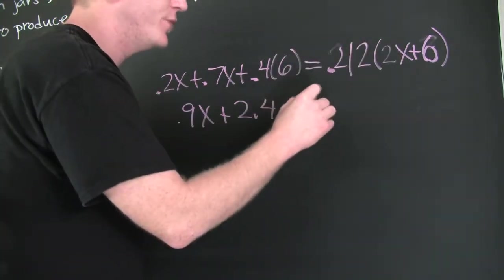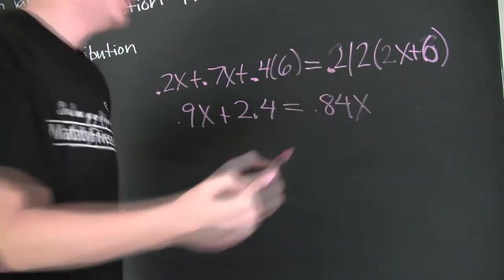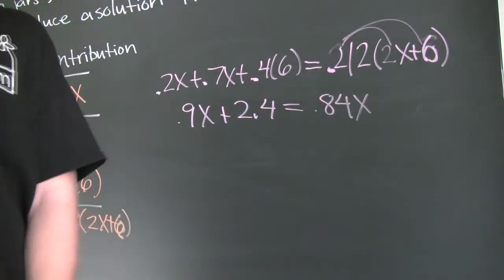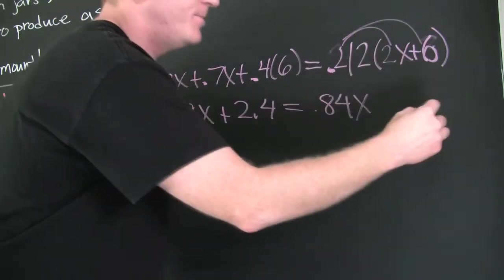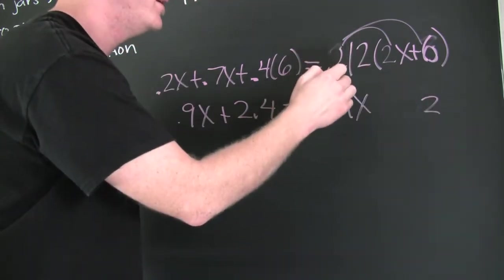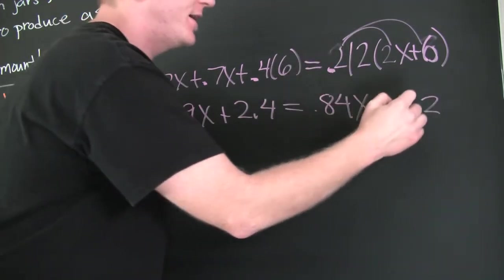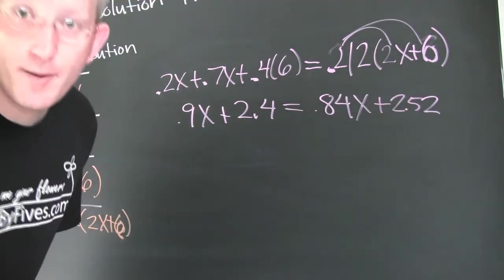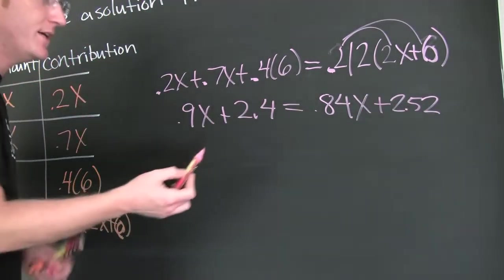Now here I'm looking at 0.42 because my final solution is to be 42% acid. This is going to be 0.84X, for sure. And then, that's 2, carry a 1, that's 24, 25. Yeah, 2.52. And then it's addition. All right, I'm going to go on with this new addition. I'm going to keep on keeping on.